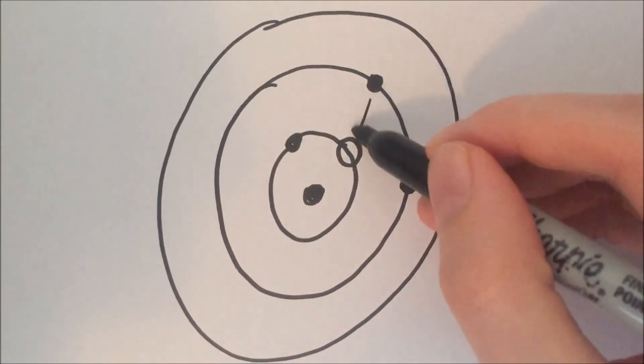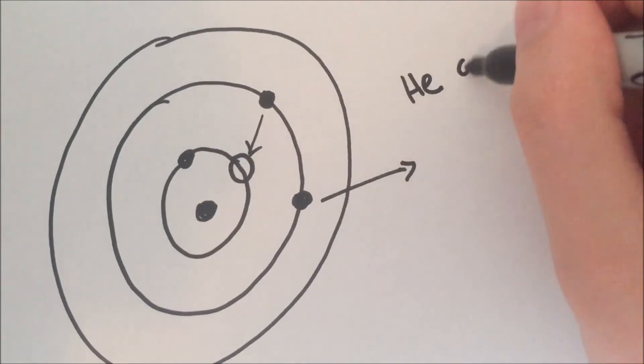Also, due to the fundamental process underlying Auger emission, hydrogen and helium cannot be analyzed by Auger electron spectroscopy as they have too few electrons.